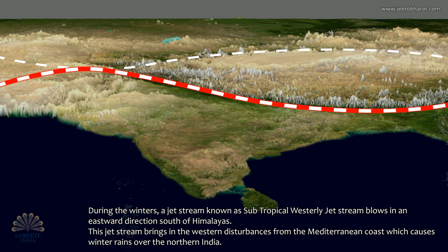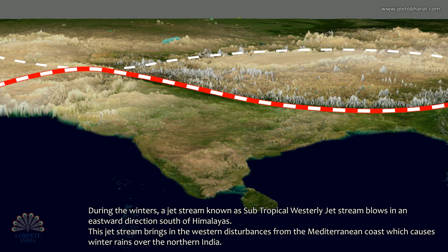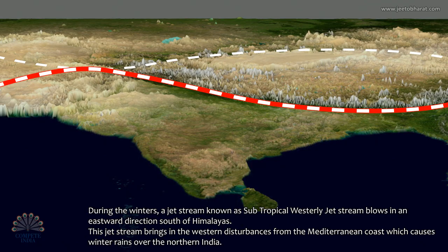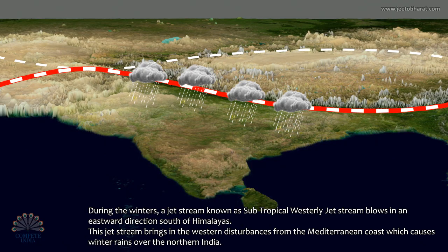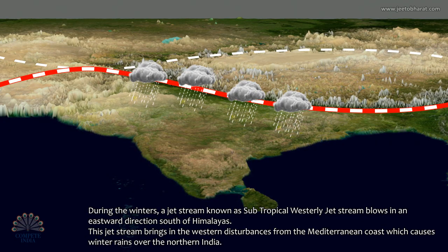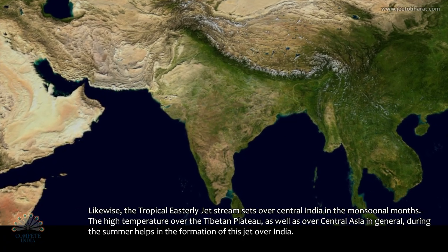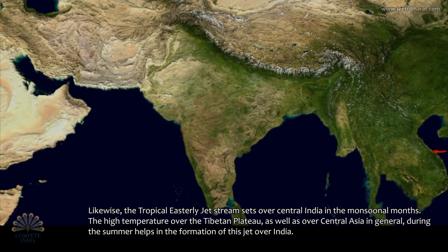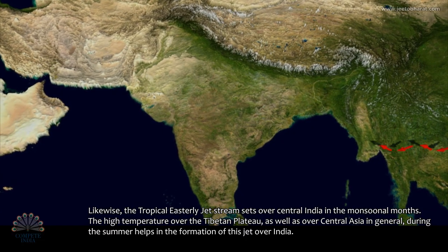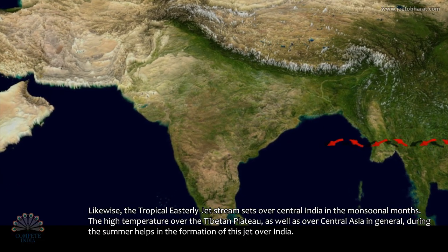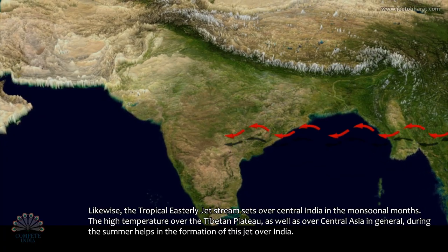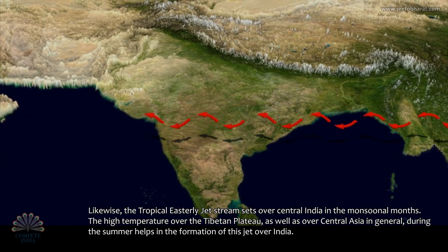During the winters, a jet stream known as the subtropical westerly jet stream blows in an eastward direction south of the Himalayas. This jet stream brings in the western disturbances from the Mediterranean coast, which causes winter rains over northern India. Likewise, the tropical easterly jet stream sets over central India in the monsoonal months. The high temperature over the Tibetan plateau as well as over Central Asia during the summer helps in the formation of this jet over India.